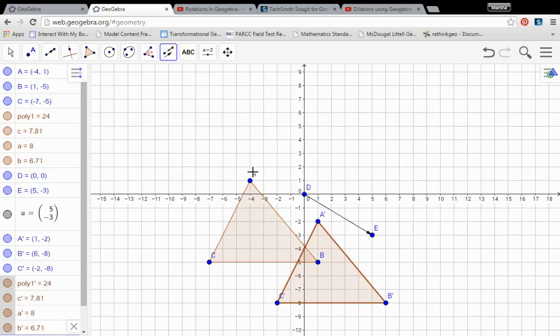So in this case I can see that A to A prime went one, two, three, four, five units to the right. And one, two, three units down. And every point on this polygon, every point in the plane has translated the direction in which this vector is pointing. So here, since the vector is pointing five to the right and three down, I know that every point in the plane has moved by that value.